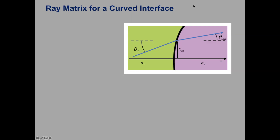The next example will be really useful moving forward. Here we have a light ray hitting a glass-air interface, but this time it's curved. We want to find the equations that determine x_in, x_out, theta_in, and theta_out, and then rearrange them to get the two-by-two matrix for the curved interface.